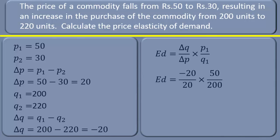We have substituted the values in the formula. Change in quantity: minus 20. Change in price: 20. Initial price: 50 rupees. Initial quantity: 200 units.